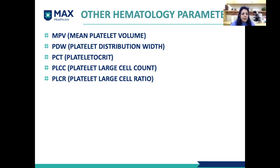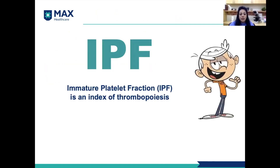These parameters include the mean platelet volume, the PDW, the platelet crit, the platelet large cell count, and the platelet large cell ratio. We'll go through all these parameters one by one and see if any of them help in predicting the recovery of the platelets. Let's begin with a small recap of IPF — the immature platelet fraction — which is an index of thrombopoiesis.